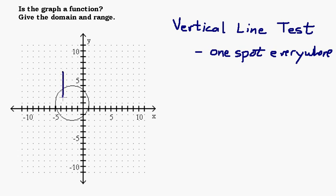So let's take a look. If I drew a vertical line like this, it's intersecting my graph in two spots. So that's out — that is not a function. Even though I could draw a vertical line out here that intersects in zero spots, or one that touches in one spot, the fact that there exists a line that touches in more than one spot means it is not a function. So this fails the vertical line test.